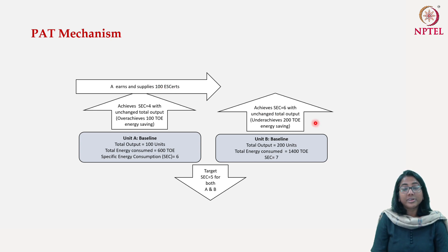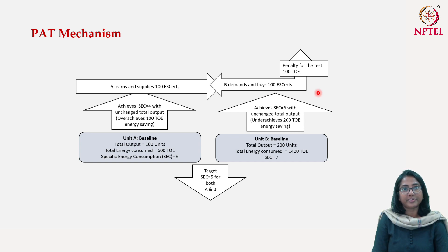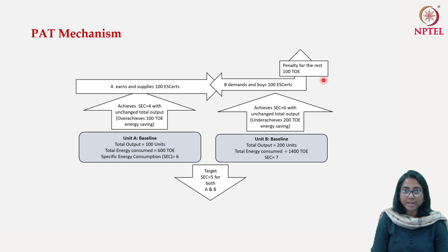The under-achiever has two options: it can buy ESCerts from the over-achiever, or it can pay a penalty. In this two-entity market, there is a supply of 100 ESCerts but a demand for 200. Unit B can buy 100 ESCerts from Unit A and pay a penalty for the remaining 100. The penalty structure must be designed so that the per-unit penalty is higher than the market price of ESCerts — otherwise Unit B will only pay the penalty and the market mechanism will not work, leading to excess supply.